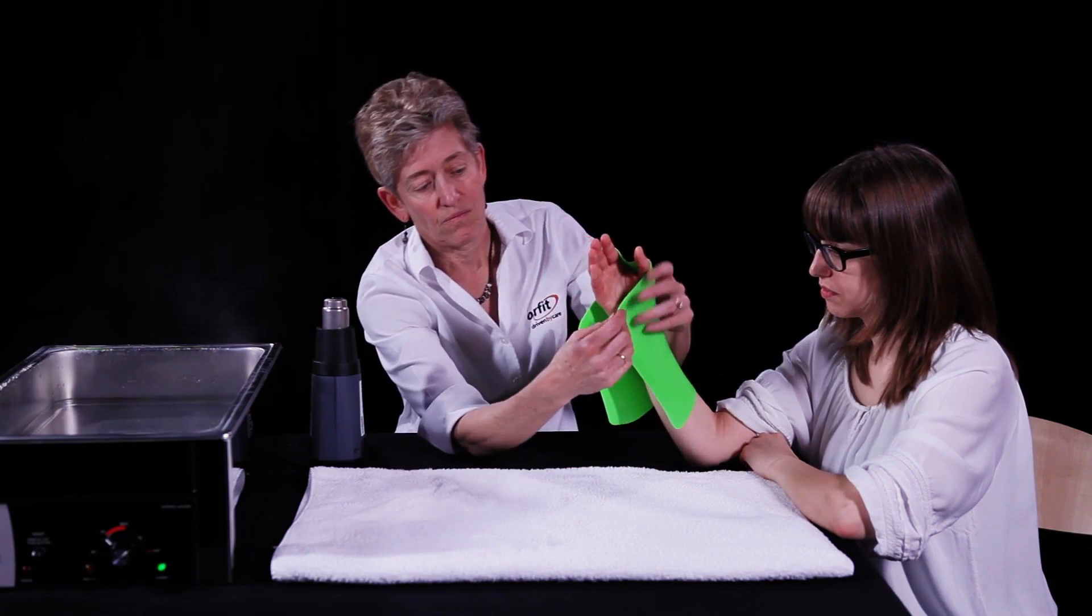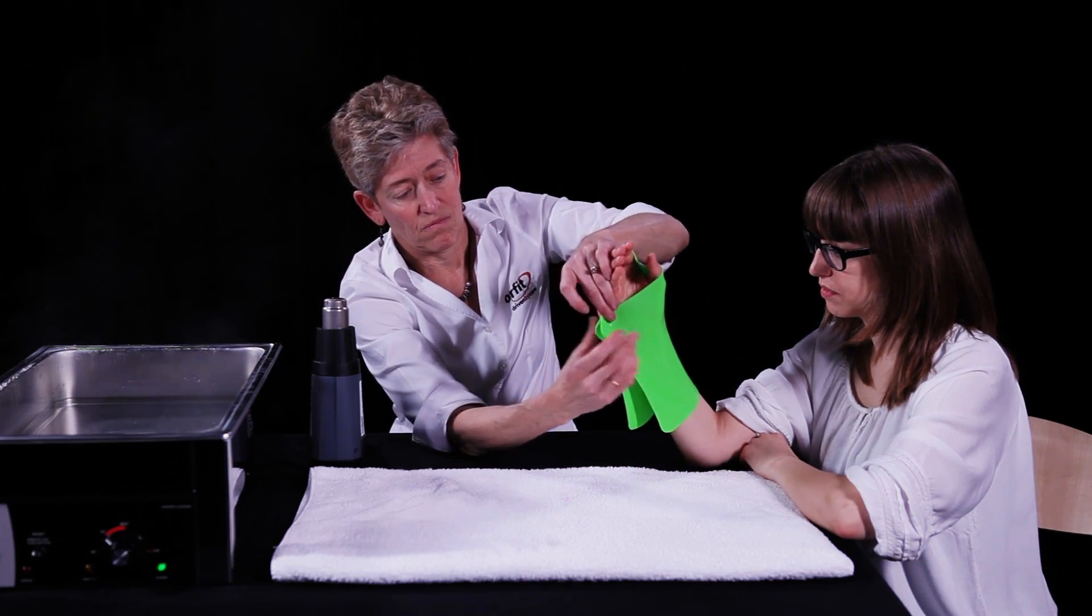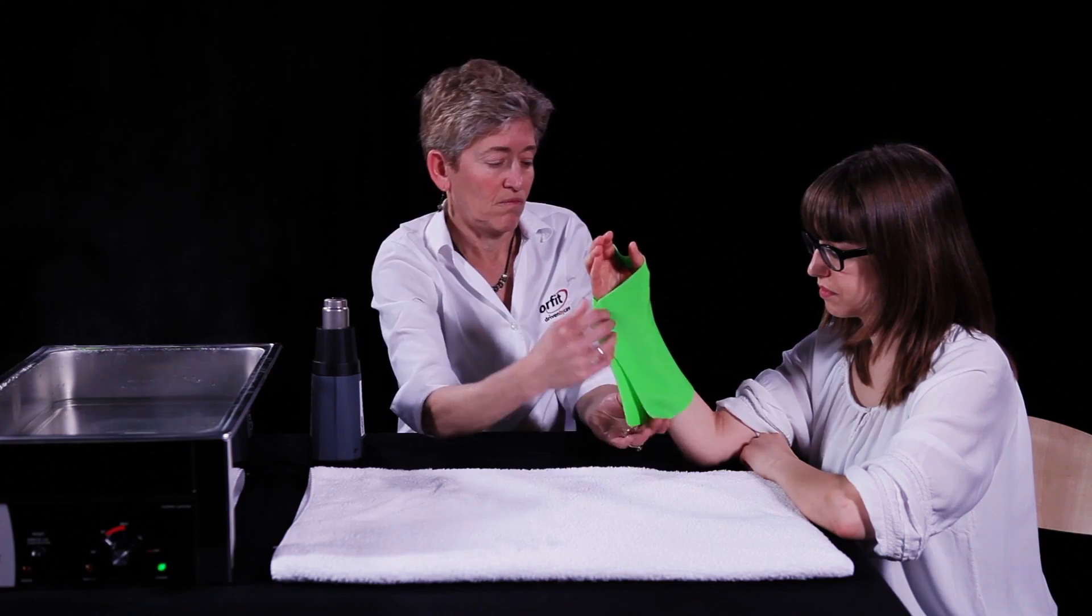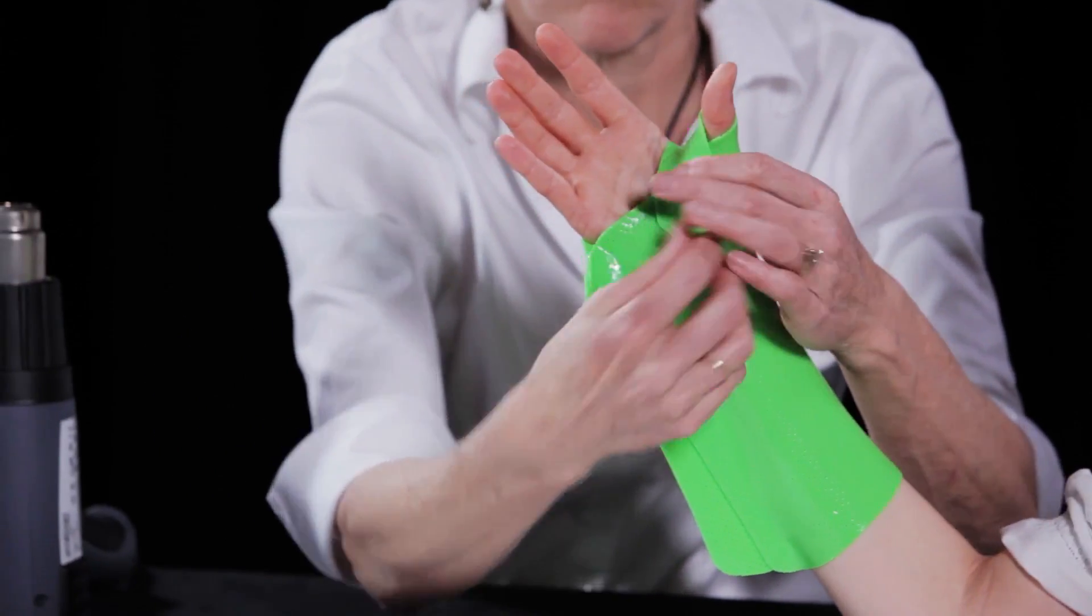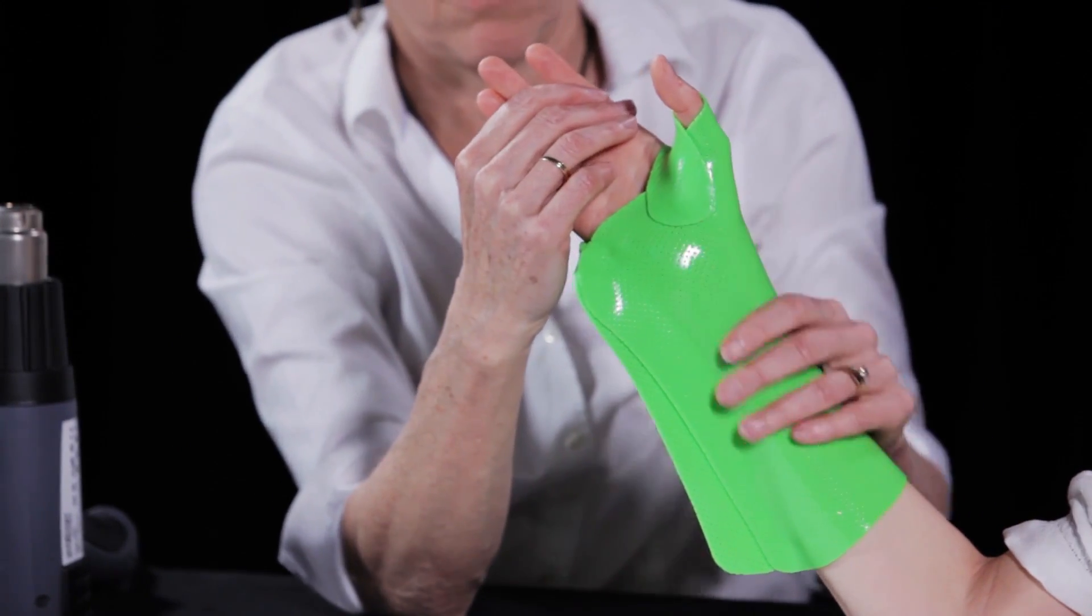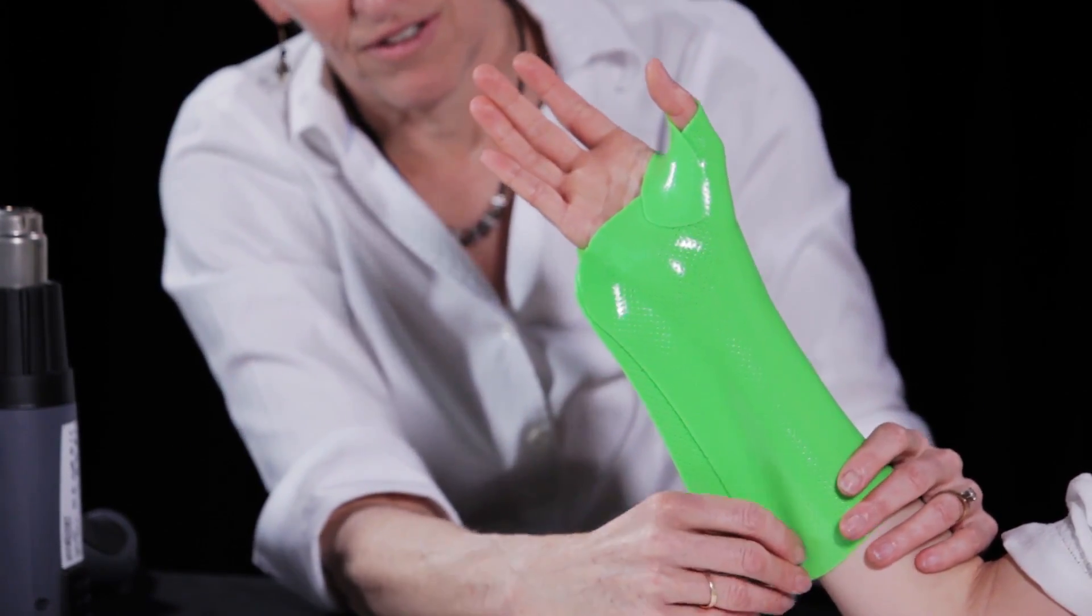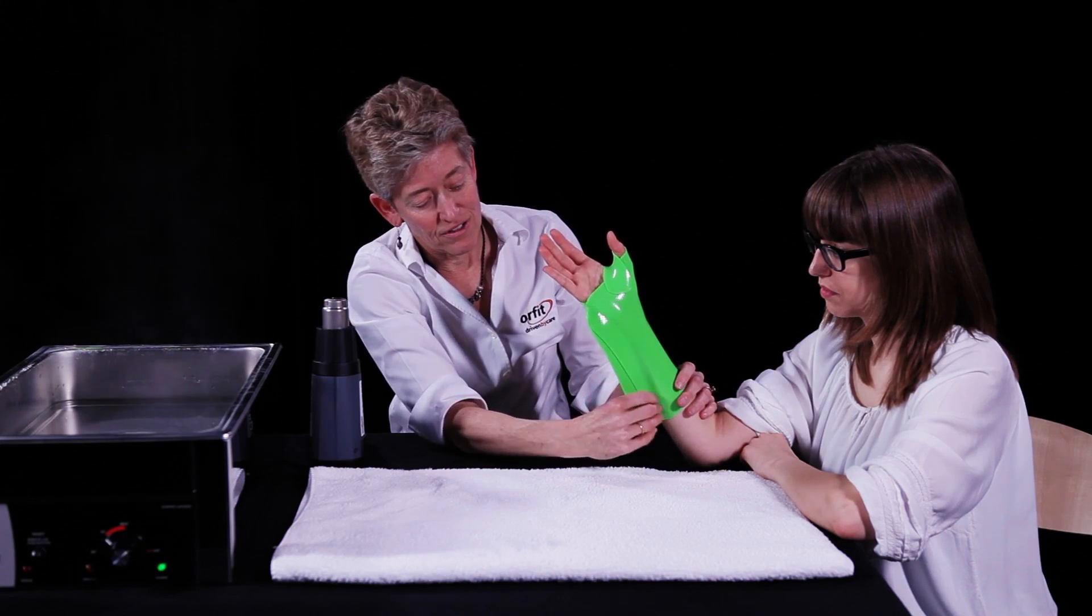Lift the patient's forearm and stretch the material so that it conforms around to the ulnar side of the hand and forearm. Pull the pre-cut tab through the first web space and attach it on the volar part of the thenar eminence, aligning the thumb in slight abduction and opposition.